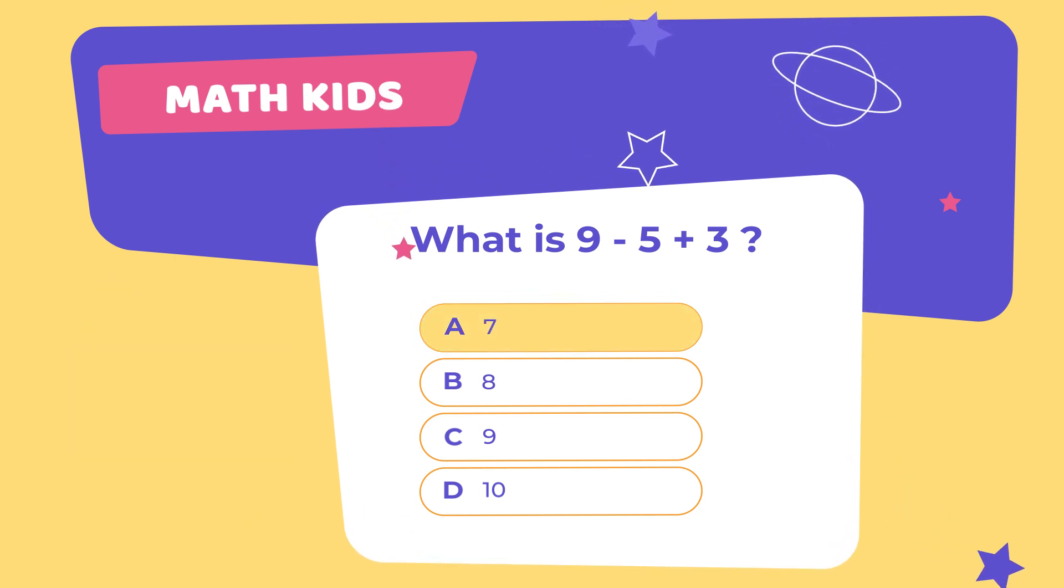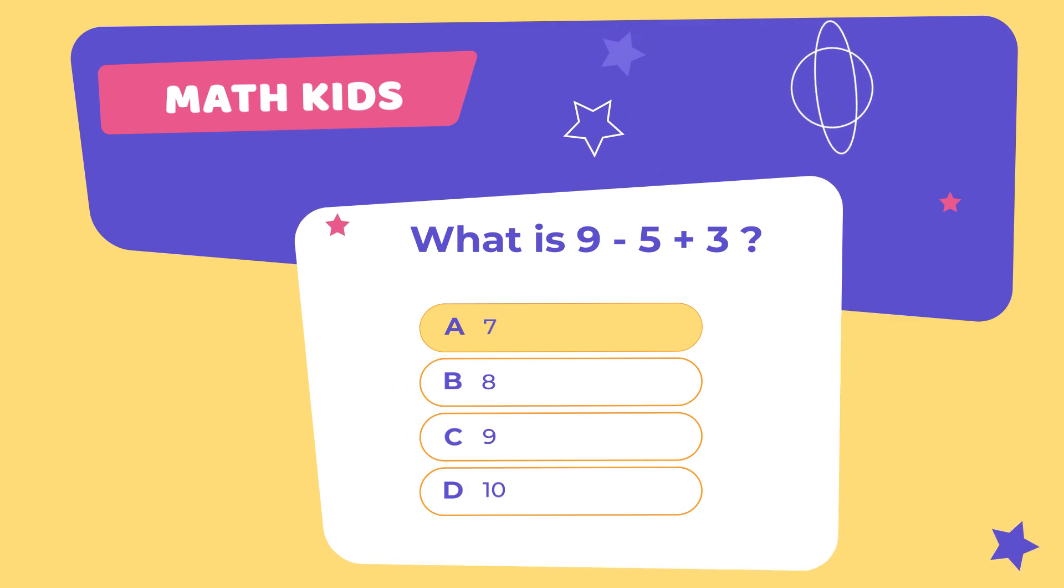You're right! Your answer is correct! Lily starts with 9 stars and gives away 5, leaving her with 4 stars. Then, she finds 3 more stars. How many stars does Lily have now? Let's count together. 1, 2, 3, 4, 5, 6, 7. Great job! Lily has 7 stars left.